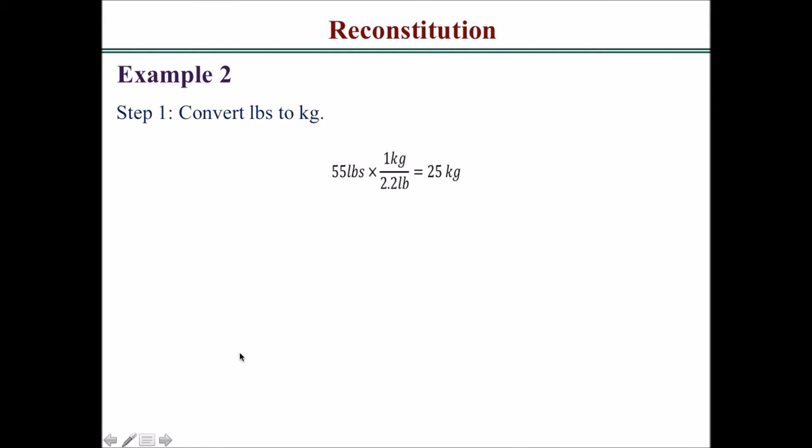First, convert the pounds to kilograms: 55 pounds times 1 kilogram divided by 2.2 pounds gives you 25 kilograms.